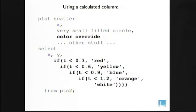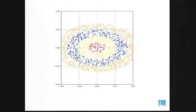Here's an example using a calculated column. Again you see the color override in the plot part. In the select part, you see a cascade of ifs. This is a simple way of getting a color spectrum corresponding to a range of values. There's the result.